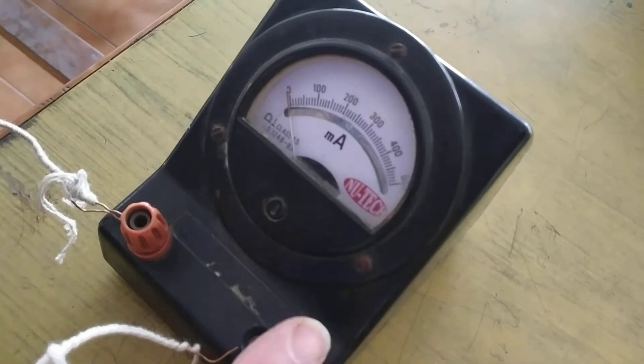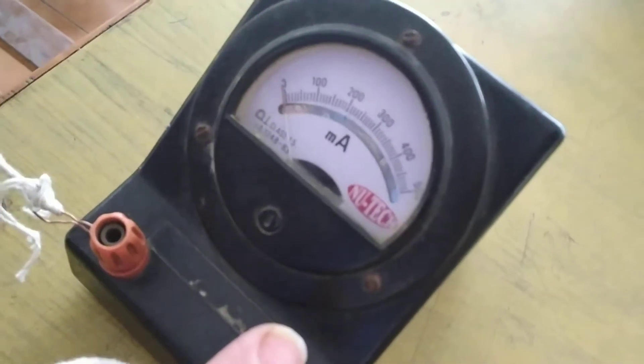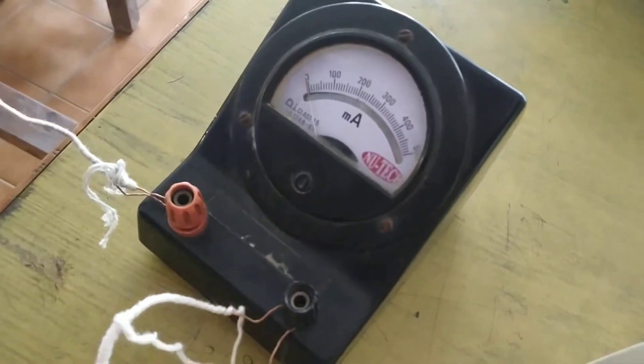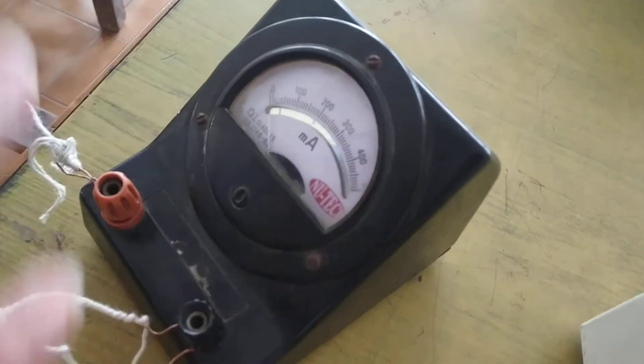This is a milliammeter with a range of zero to five hundred. Its function is to measure current. It has very low resistance and is always connected in series.